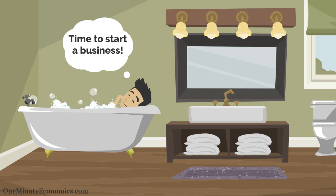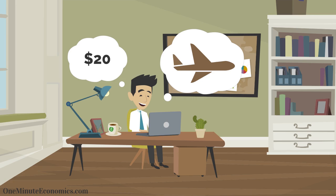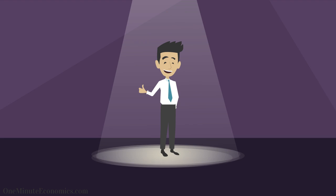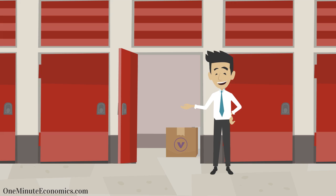Let's assume John starts a business which involves making small wooden airplanes and selling them at 20 bucks each. For the sake of simplicity, we'll also assume that: a) he does everything himself, b) his only fixed cost is the $1,000 monthly he pays to rent the space he needs,